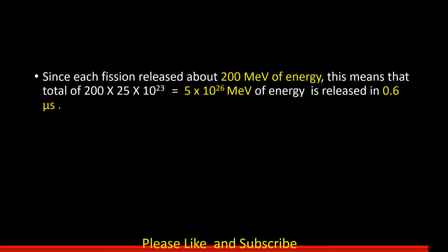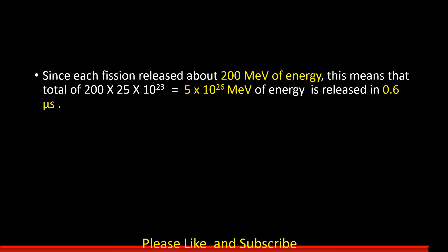Since each fission released about 200 MeV of energy, this means that a total of 200 × 25 × 10^23 = 5 × 10^26 MeV of energy is released in 0.6 microseconds.